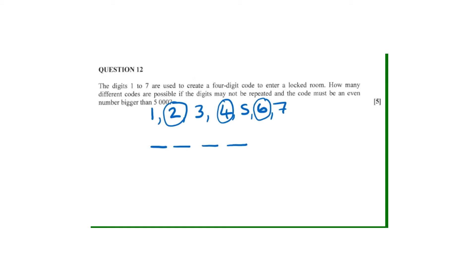The other thing that we also need to bear in mind is that it must be bigger than 5000. For it to be bigger than 5000, it means it can start with a 5, it can start with a 6, or it can start with a 7. So those are the options, and repetition in this case is not allowed.